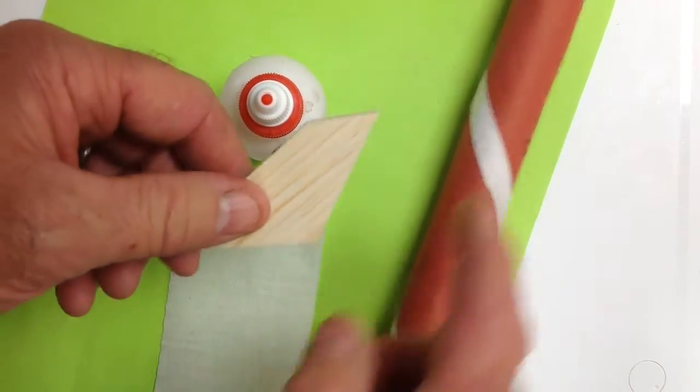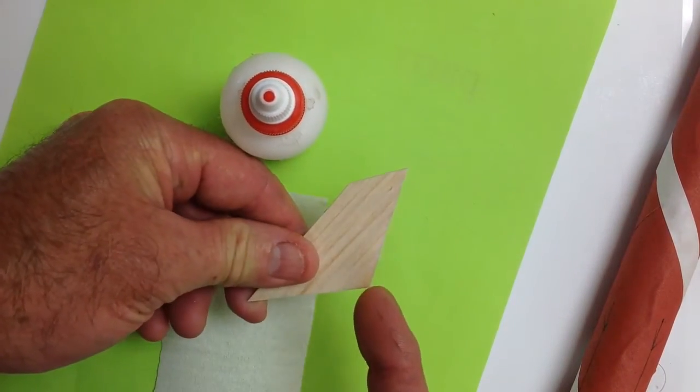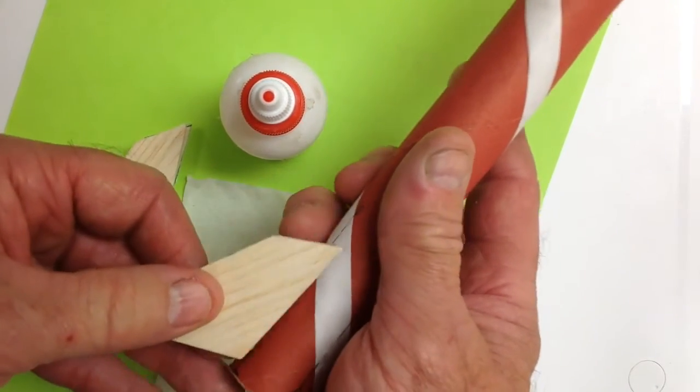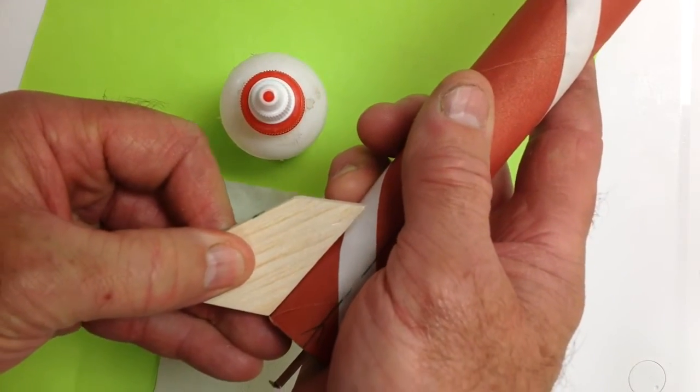A couple of things to look for. Try to keep the bottom edge of your fin, in my case that's this here, right at the bottom of your rocket. So something like that.